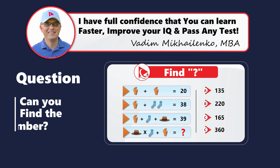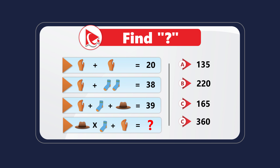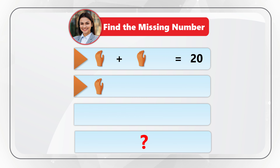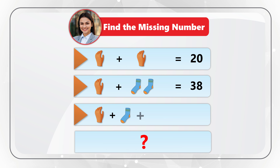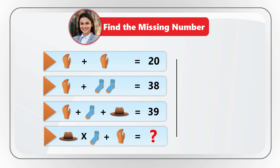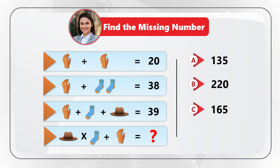Surprise! I have a problem for you to solve. You need to solve the expression and find the missing number. The three full expressions are: Glove + Glove = 20; Glove + two Socks = 38; Glove + Sock + Hat = 39. The last expression is: Hat × Sock + Glove = missing number. Select from choices A: 135, B: 220, C: 165, or D: 360. Once you calculate it, please post in comments so I can give you feedback. Good luck.